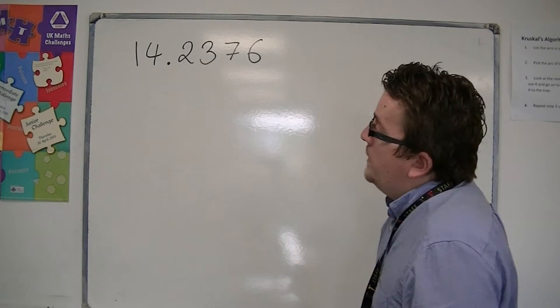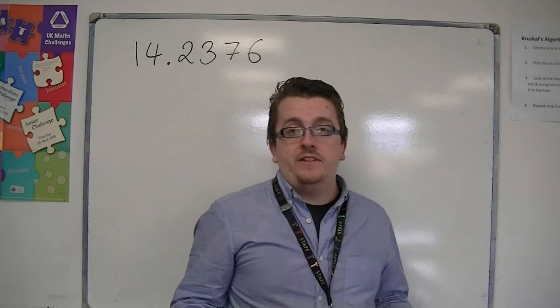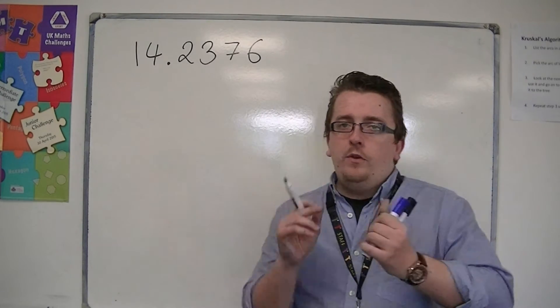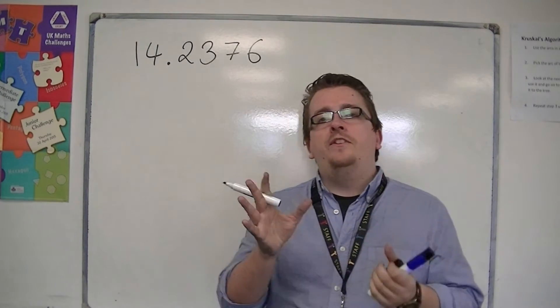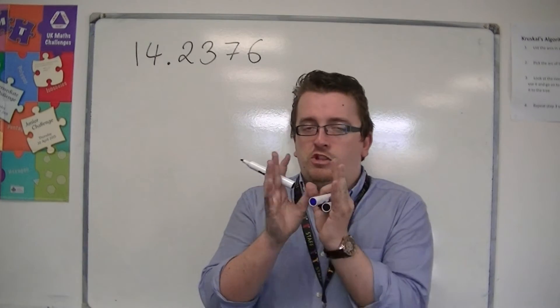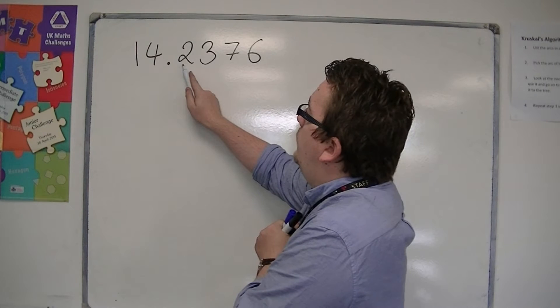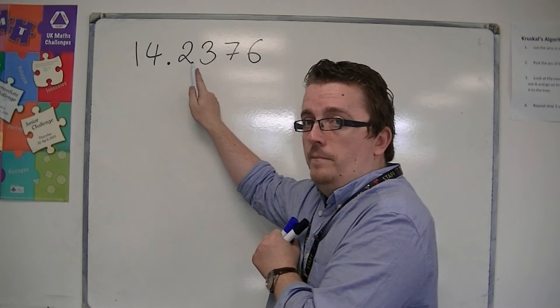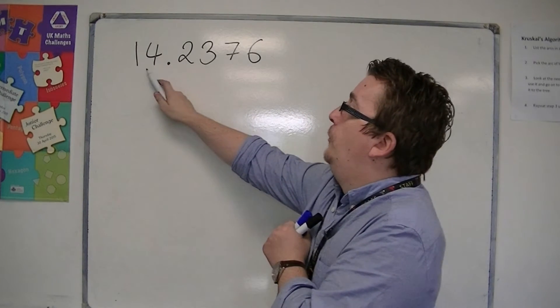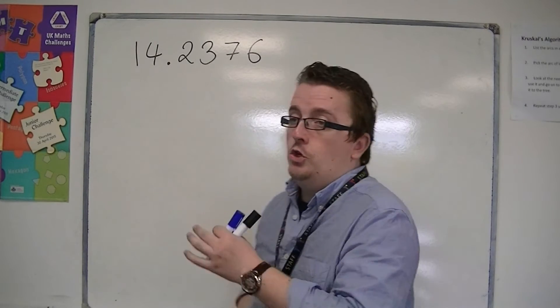You could think of this as centimeters, for example. So if you think of a ruler and centimeters, you'll know that the centimeter is split up into millimeters. So this is identifying the millimeters column. So I would have 14 centimeters and 2 millimeters.